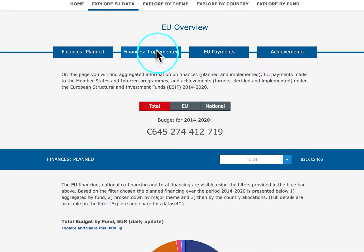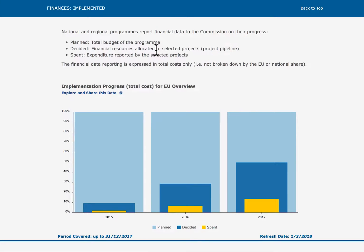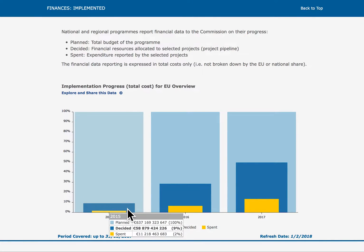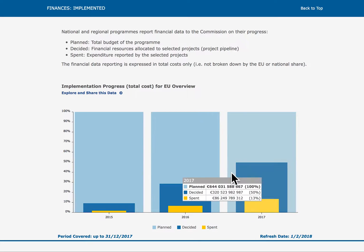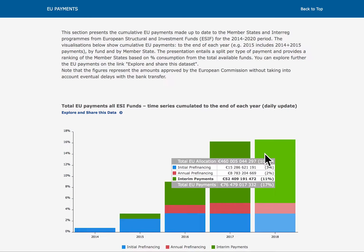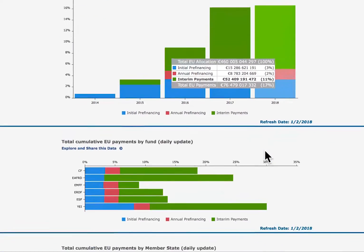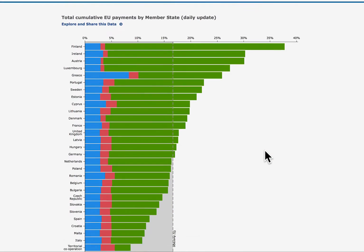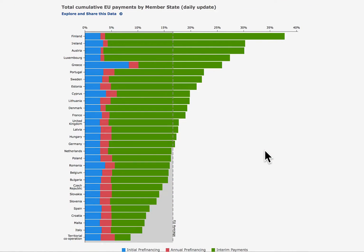The implemented finances show the financial data reported by national and regional programmes to the Commission. The implementation progress is expressed in total cost and provides information on the planned, the selected projects decided, and the expenditure, graphed in time series showing progress. The payment graphs present the EU financial resources actually paid to national and regional programmes and the Interreg programmes for the programme period, on a cumulative basis and year by year.